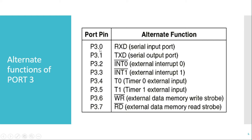Port 3 has 8 pins. P3.0 is treated as the receive pin, also called the RxD pin, used for serial reception. Whenever we want to receive 8-bit data from an external device, that data will be received on P3.0. P3.1 is used for transmission and is called the TxD pin, used for serial transmission. Whenever the CPU wants to send data serially to an external device, that data will be sent using P3.1.